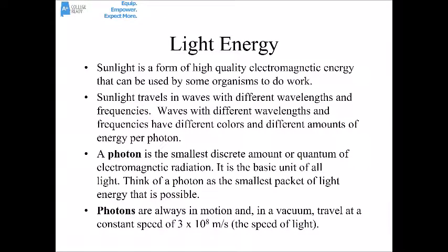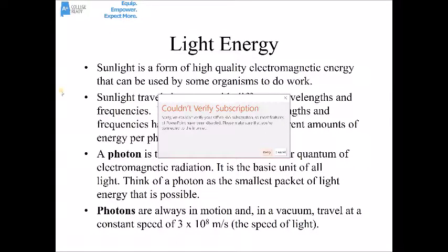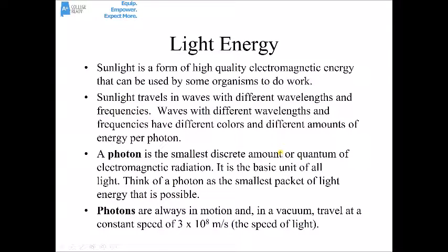Sunlight is a form of high-quality usable electromagnetic energy that organisms use to do work. It travels in waves with different wavelengths and frequencies, which have different amounts of energy and appear as different colors. Think of a photon as the smallest piece of light — the smallest discrete amount, or quantum, of electromagnetic radiation. It's the basic unit of light. Photons are always moving, and at least in a vacuum they travel at the constant speed of light: 3 × 10⁸ meters per second.